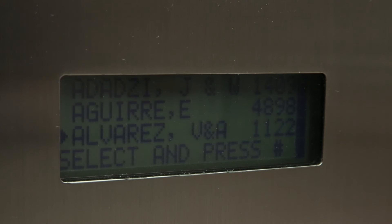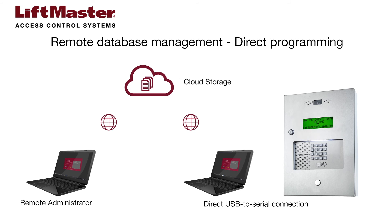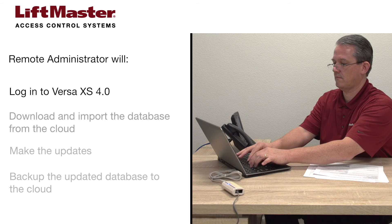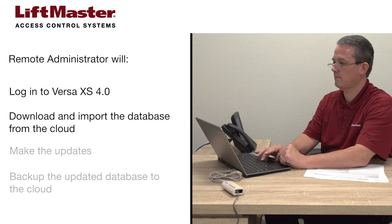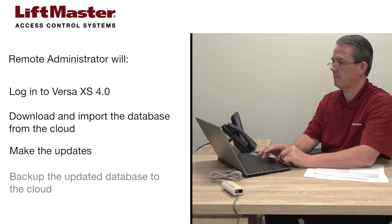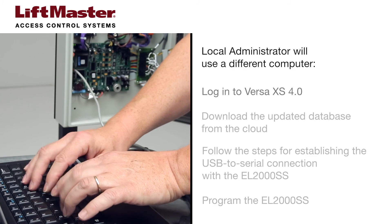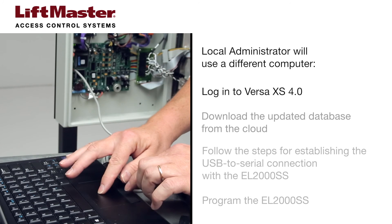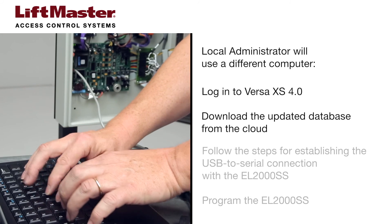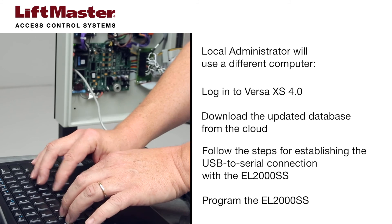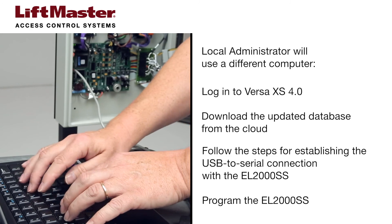Have someone verify the updates at the telephone entry system. Some administrators may prefer to manage database updates from a remote office but have the telephone entry system programmed with a direct connection. In this case, the remote administrator will log in to Versa XS 4.0, download and import the database from the cloud, make the updates, and back up the updated database to the cloud. Then the local administrator will use a different computer, log in to Versa XS 4.0, download the updated database from the cloud, follow the steps for establishing the USB to serial connection with the EL2000SS, and program the EL2000SS.